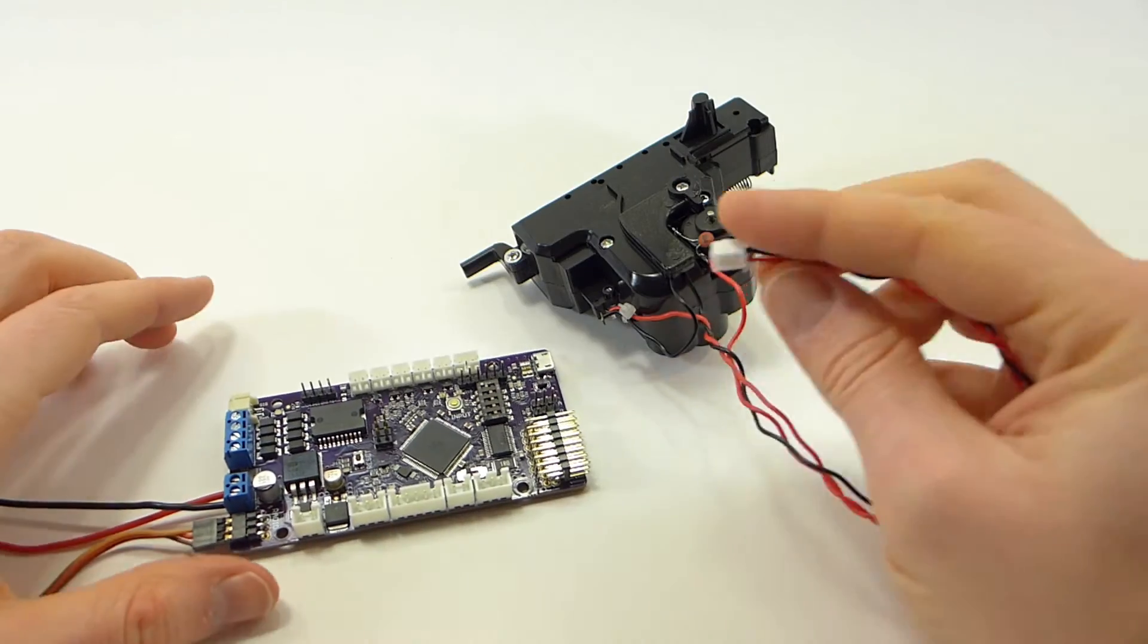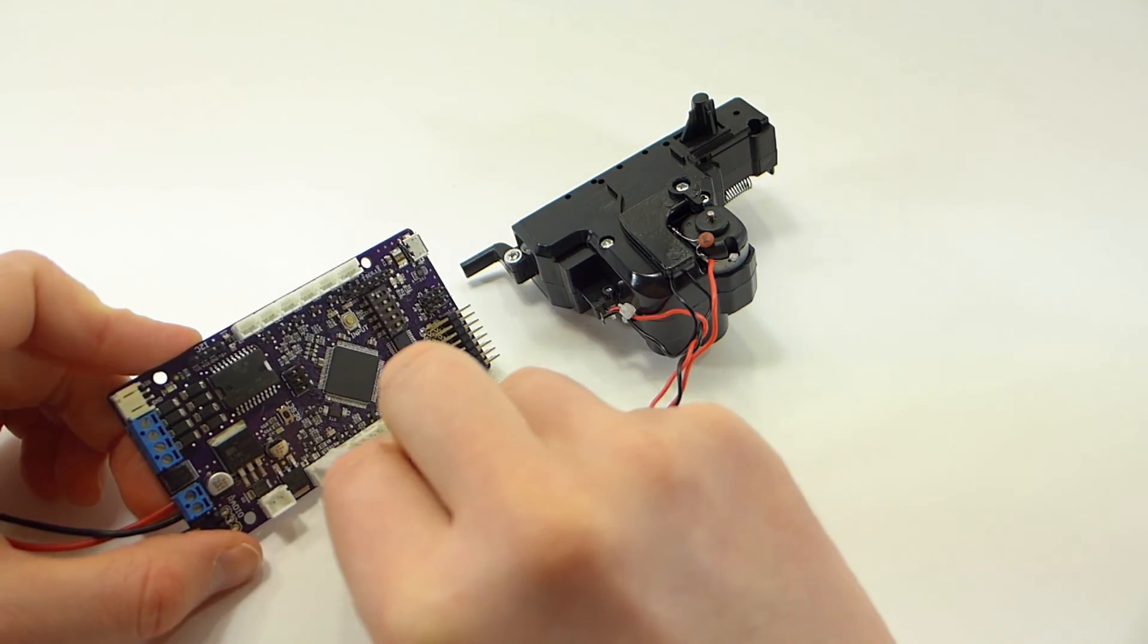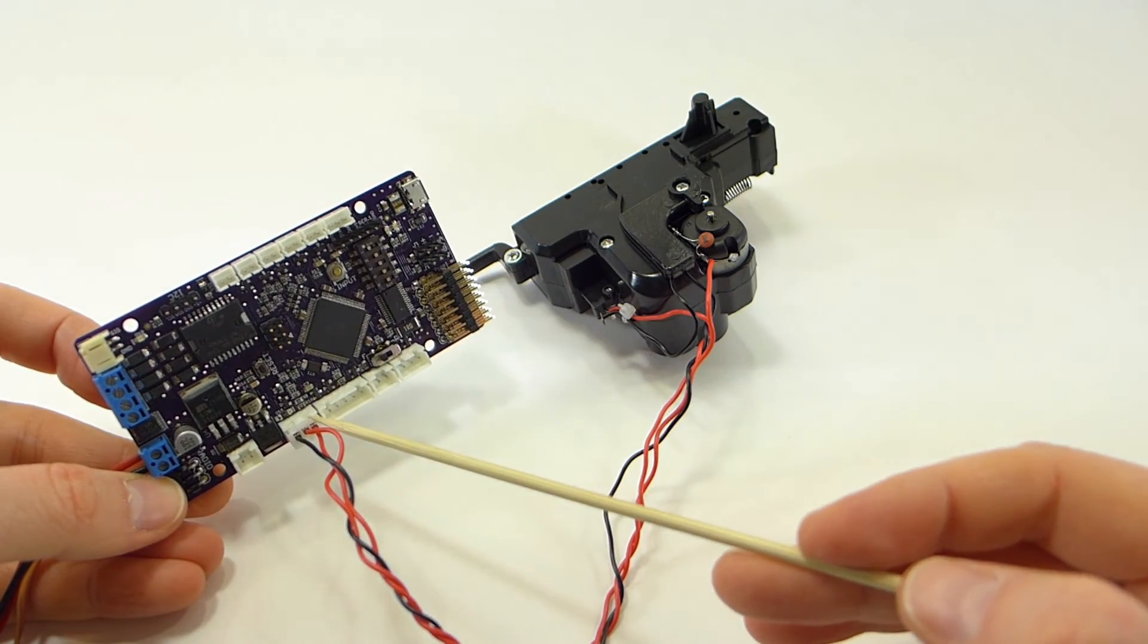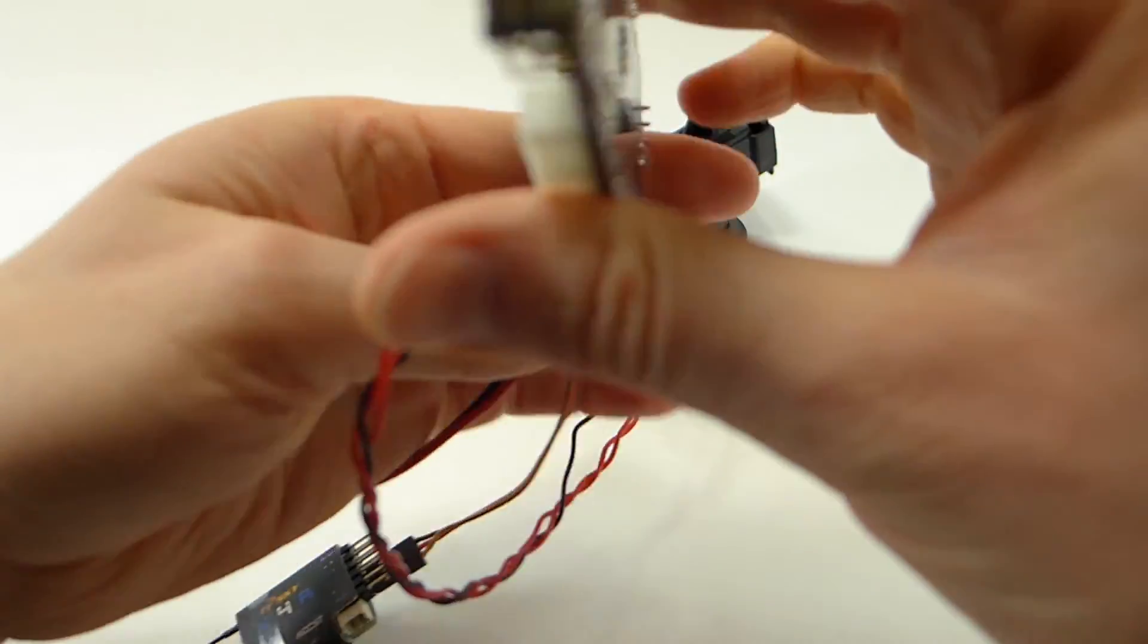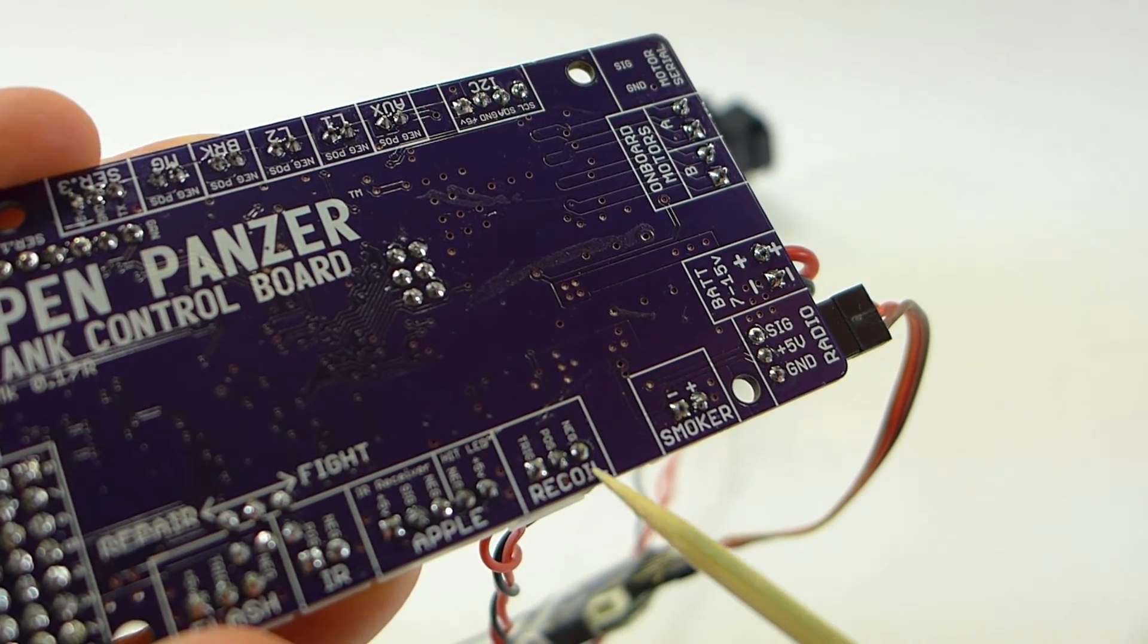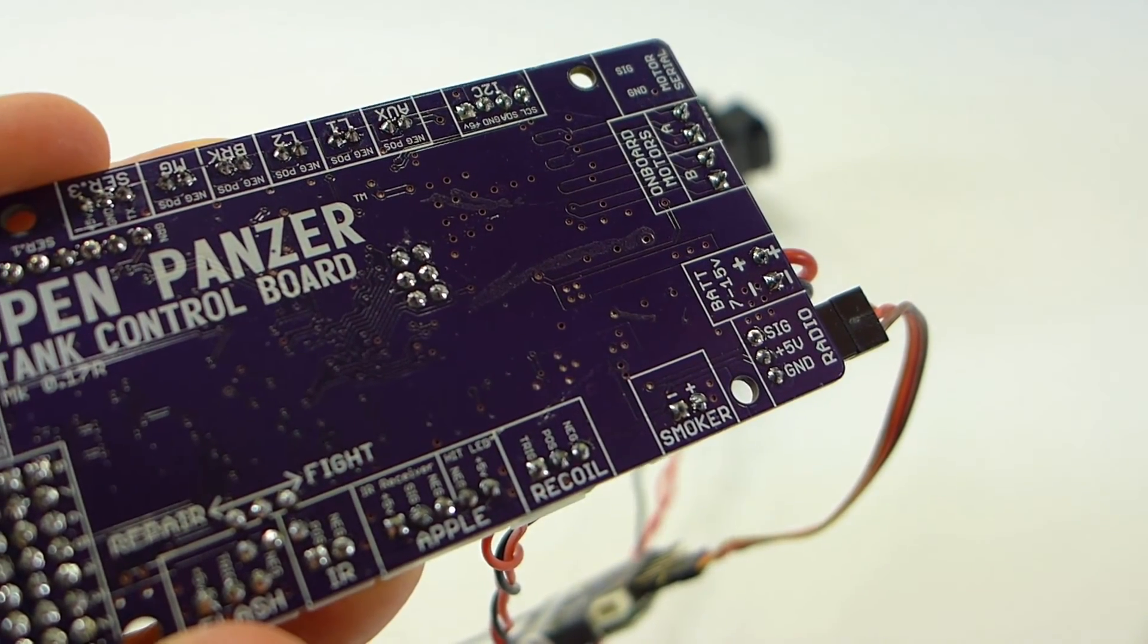Let's test it out now. The three-pin plug will attach to the TCB in the recoil slot. It's the same plug that we would use for a mechanical recoil unit if we were using one of those. So you can only use mechanical recoil or airsoft, but not both.